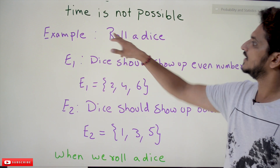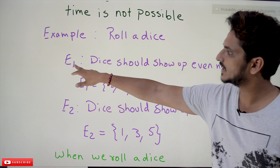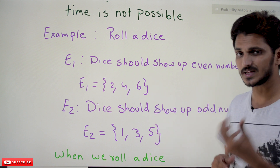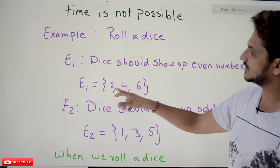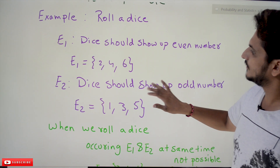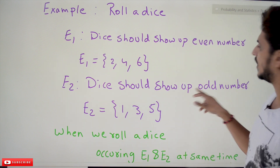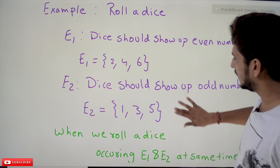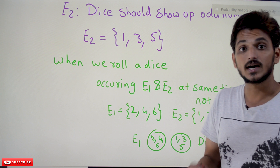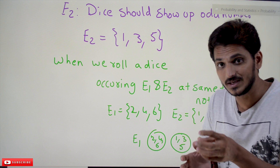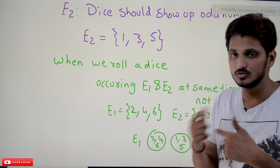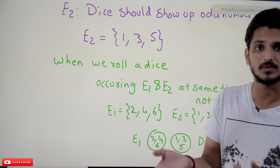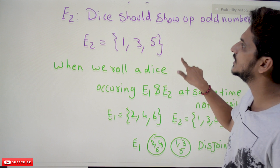Example: if you roll a dice, event E1 is the dice shows an even number, so E1 = {2, 4, 6}. Event E2 is the dice shows an odd number, so E2 = {1, 3, 5}. When we roll a dice, occurring of both events at the same time is not possible — it may show an even number or an odd number, but both is not possible. That's why E1 and E2 are mutually exclusive events.